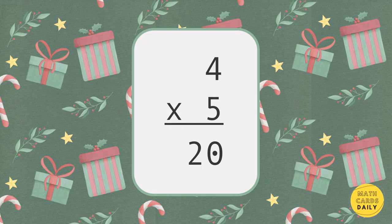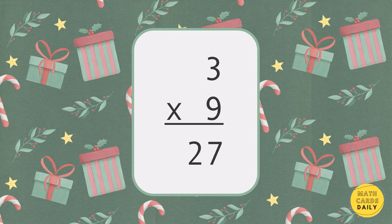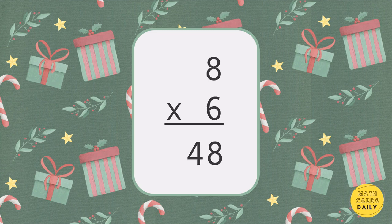4 times 5 equals 20. 8 times 8 equals 64. 3 times 9 equals 27. 9 times 6 equals 54. 4 times 3 equals 12. 7 times 4 equals 28. 8 times 6 equals 48.